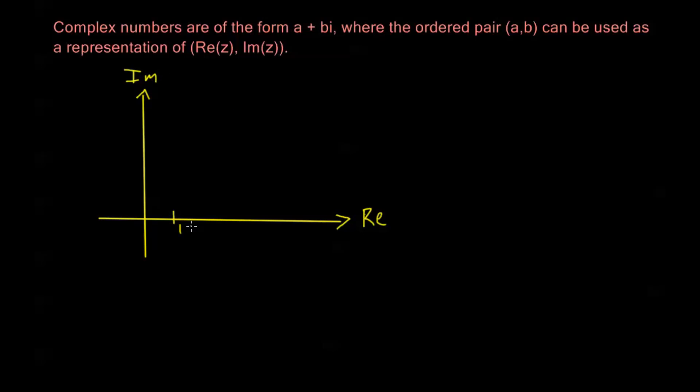But this horizontal axis we call the real axis and this vertical axis we call the imaginary axis. So along the real axis we'll have numbers like 1, 2, 3, etc. And along the imaginary axis we'll have numbers like I, 2I, 3I, etc.